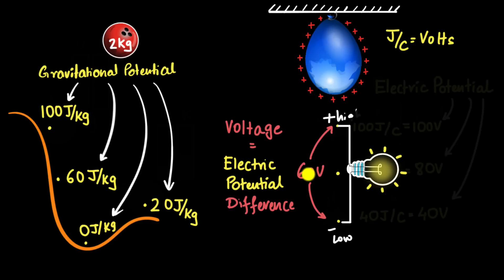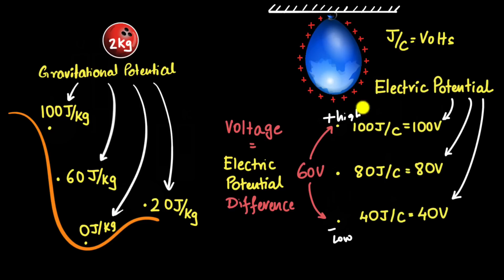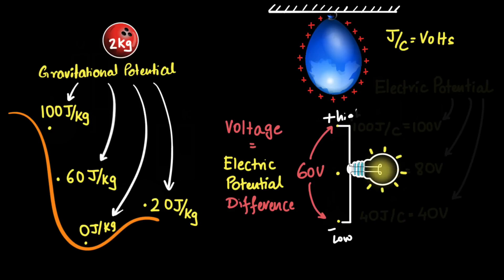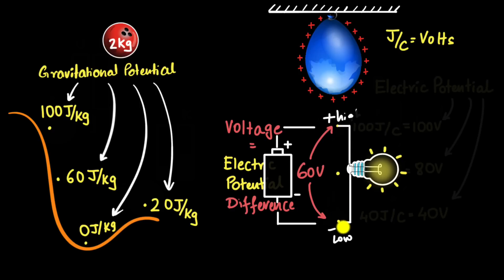Another question: what generates this potential difference in the first place? In general, whenever there is an electric field — like the charged balloon created an electric field — you can create a potential difference. When it comes to circuits, that electric field is created by batteries. Batteries are the ones that create electric fields and create potential differences.